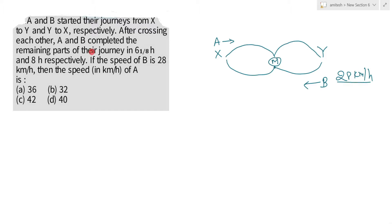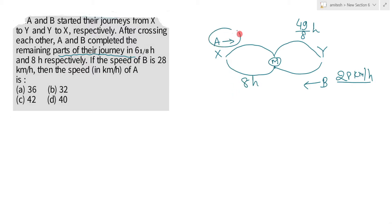A and B completed the remaining parts of their journey — A completed in 49/8 hours and B completed the remaining journey in 8 hours. So the question is asking for the speed of A.